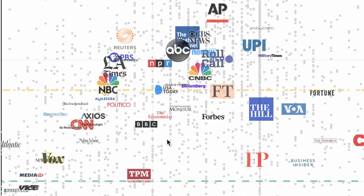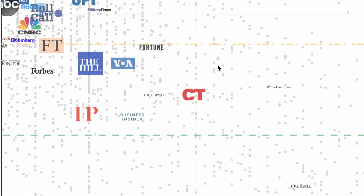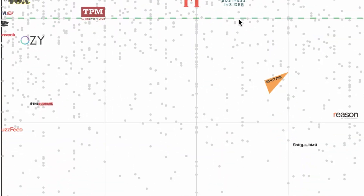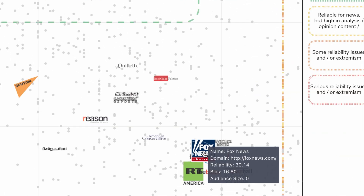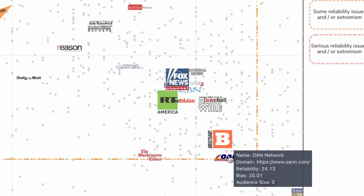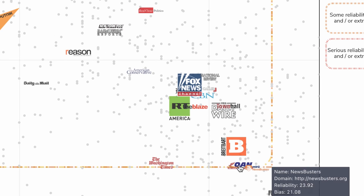Once you get below this line, you get into territory where maybe it's not as reliable. CNN leans left. Over on the right, Business Insider leans right. You want news organizations to stay up in the reliable zone. Once you get down lower, you're not looking at anything good. Fox News gets a very low score and is on the right-hand side. New networks like OAN fall right on the line that borders between reliable news with high analysis and opinion content, but also borders on reliability issues and or extremism — not good for a news network like OAN.